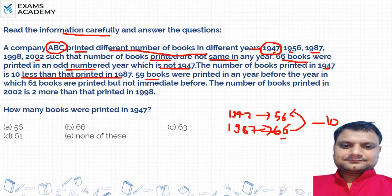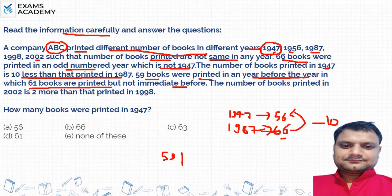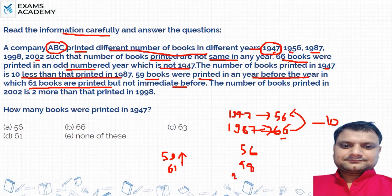It says 59 books were printed in a year before the year in which 61 books are printed, but not immediately before. We have three years left: 1956, 1998, and 2002. Since immediately before should not happen, 59 books are assigned to 1956 and 61 books to 1998.